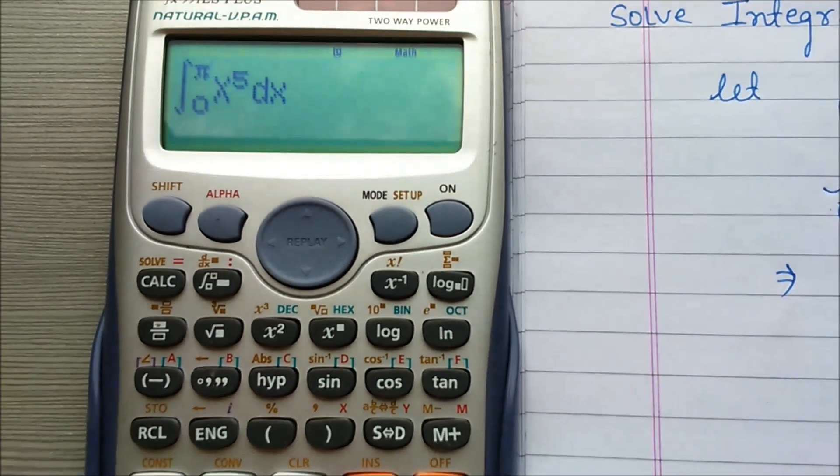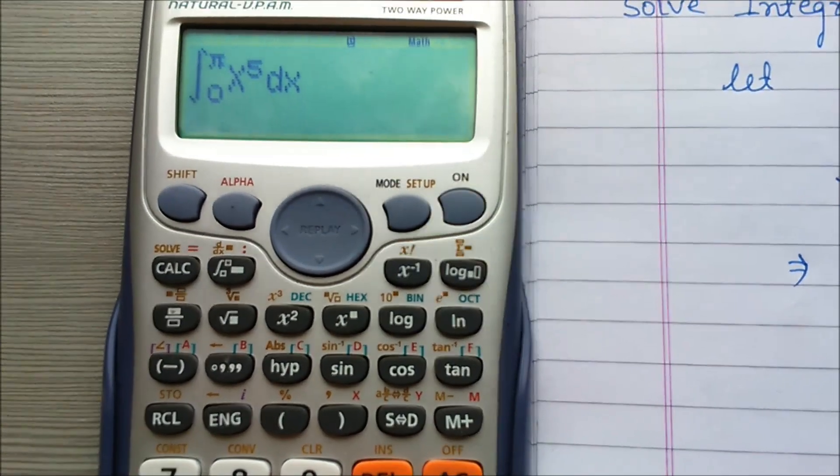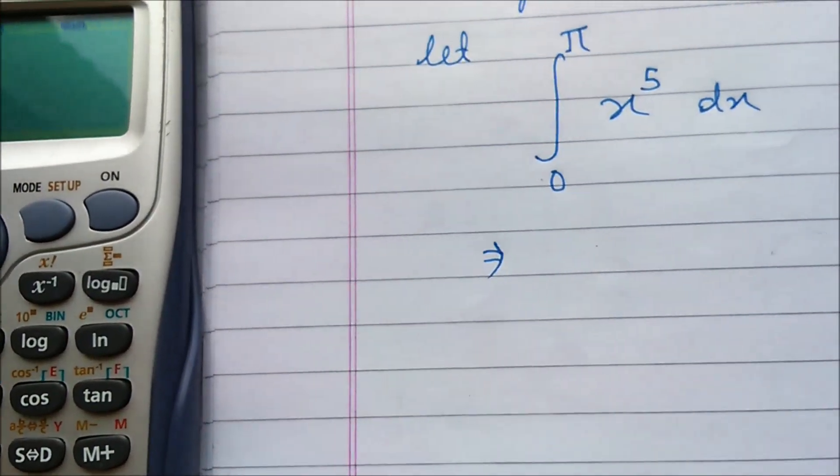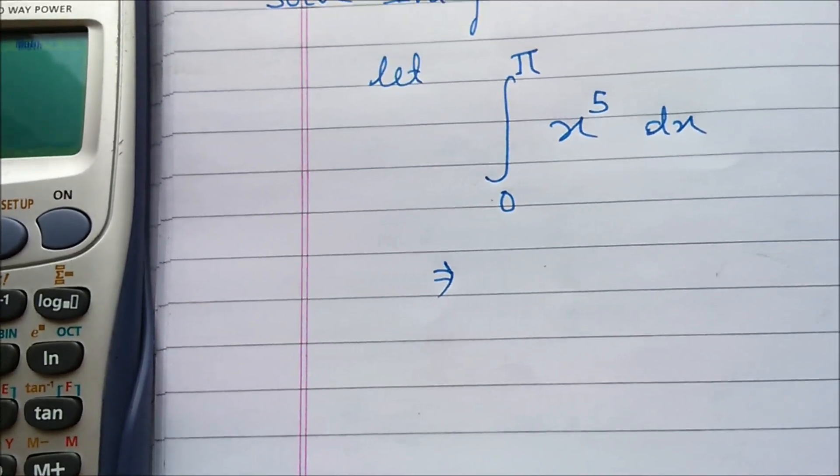Now click here. See, 0 to pi, x to the power 5 dx. The same value is here: 0 to pi, x to the power 5 dx.